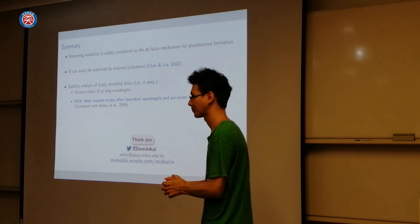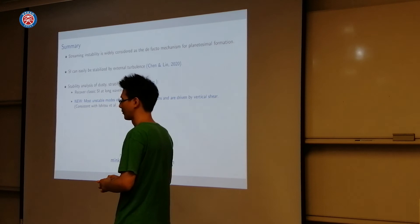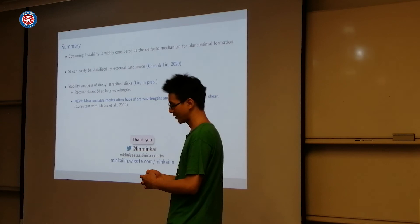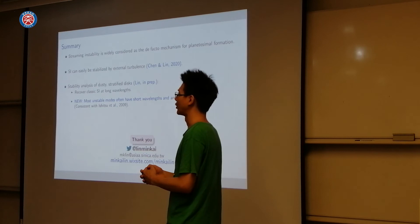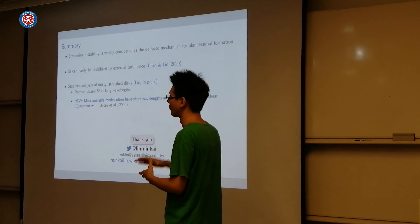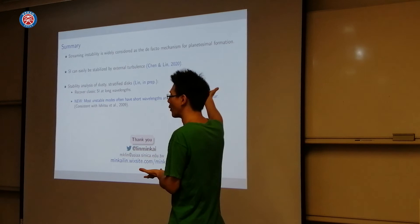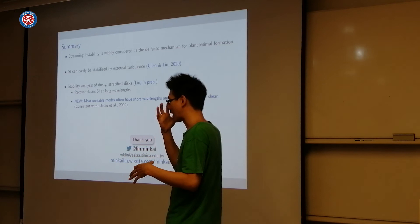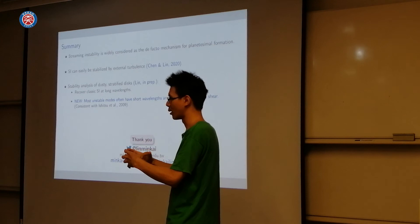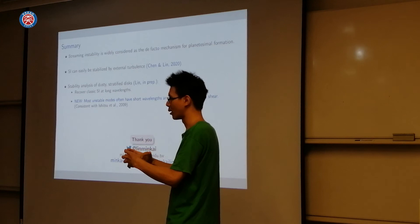Question: Do you think streaming instability can occur in a vortex? There have certainly been claims of streaming instability happening in vortices, but I don't know whether it's the same thing as what's happening here, because the flow structure in a vortex is quite different. But in broad terms, something similar could happen because the streaming instability is ultimately about pressure bumps trapping particles, and particles dragging gas to enhance the bump. Since a vortex is by definition a pressure bump, something similar could happen.